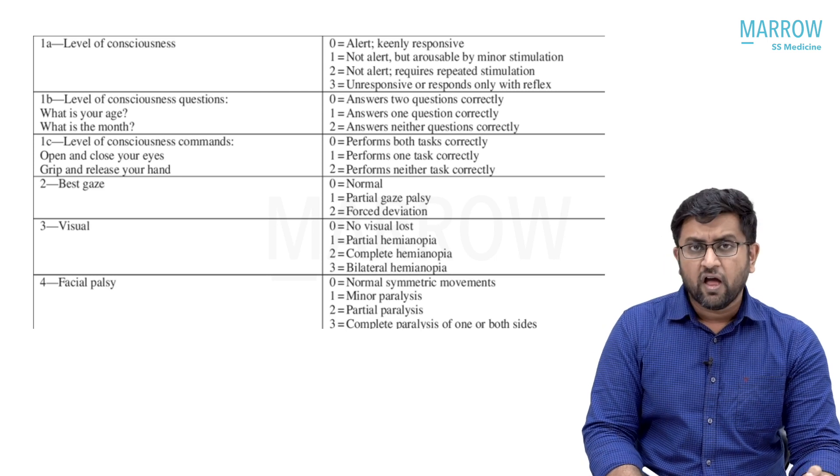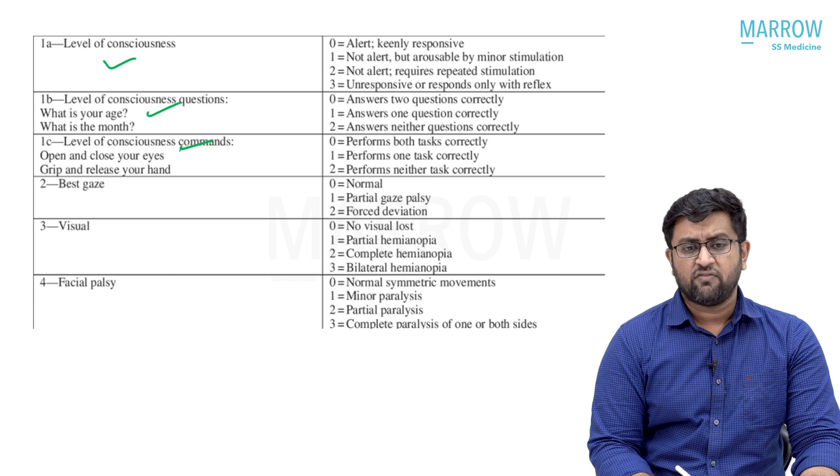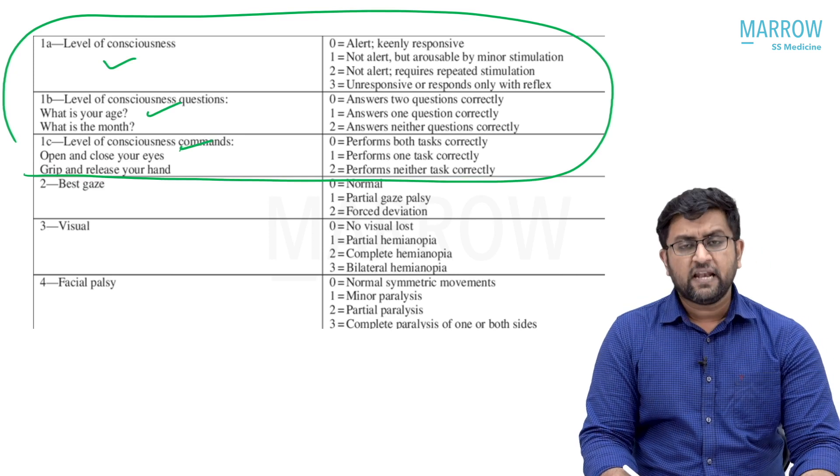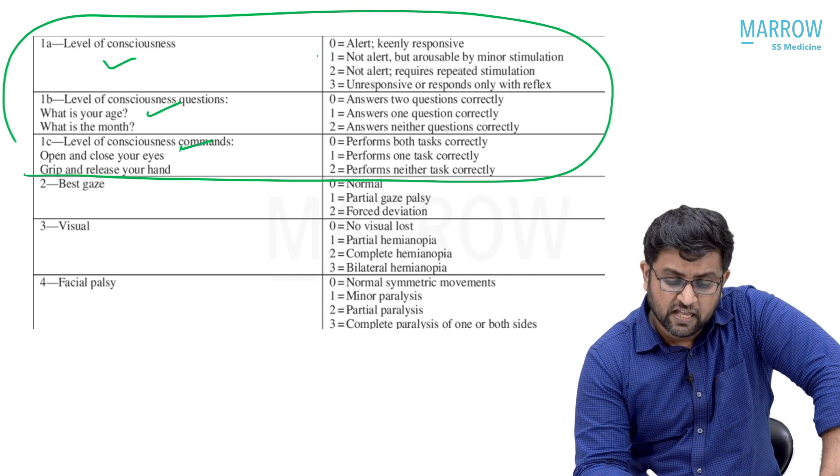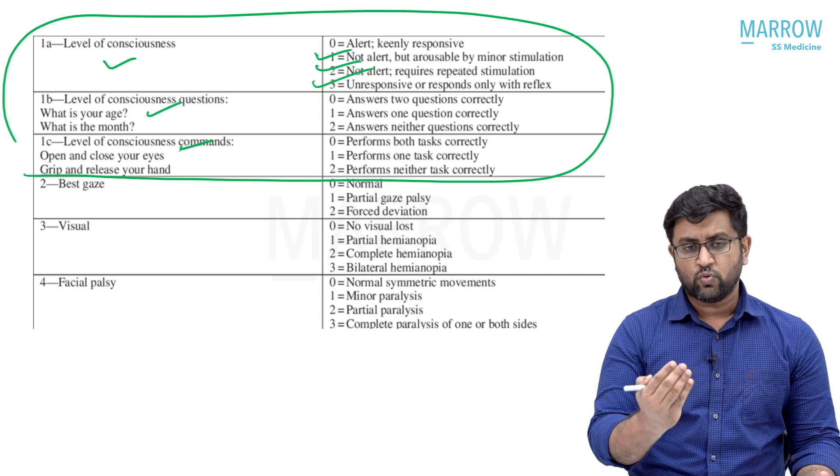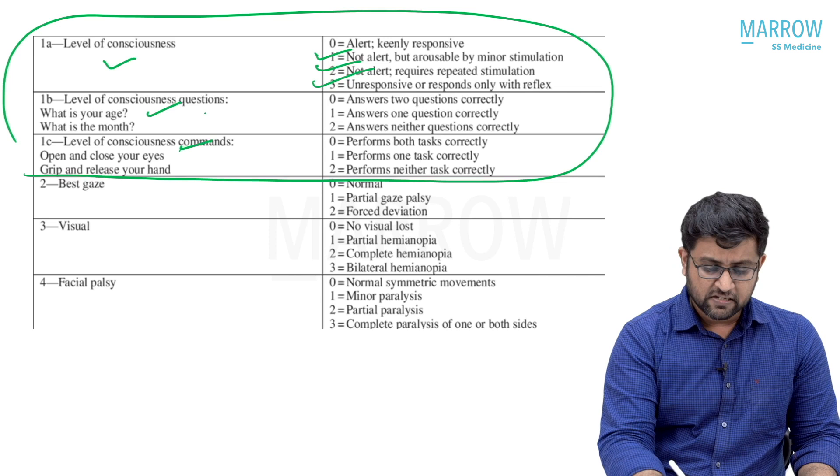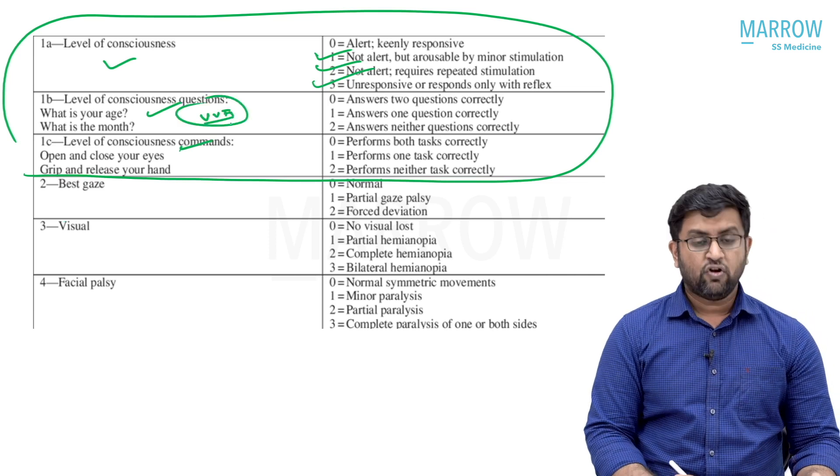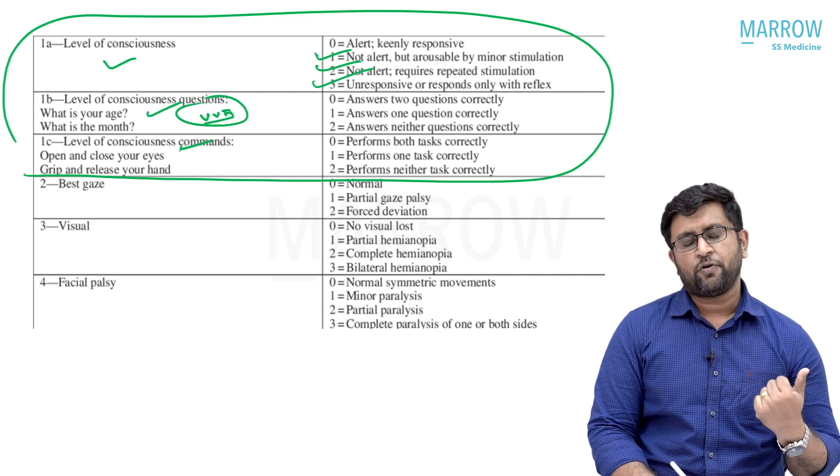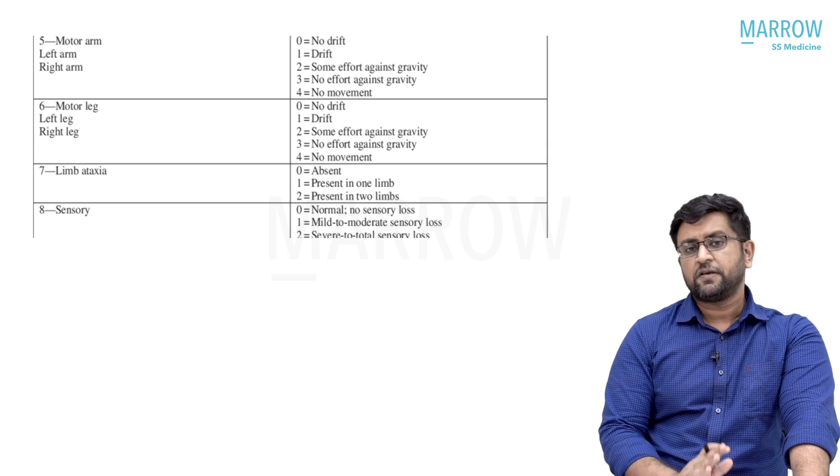This is the NIHSS score. There have been questions repeatedly from this scoring area. You should know how to assess the initial part. Especially, level of consciousness has three levels: level of consciousness questions, plain level of consciousness, and level of questions command. Questions came from these three topics. Two questions came, one in INI and one in NEET. Level of consciousness: alert is zero. Not alert but arousable by minor stimulation. Not alert but arousable by repeated stimulation. Unresponsive only with reflex. The question asks for LOC questions and LOC commands. LOC questions: you will ask two questions - what is the age and what is the month. This has been asked twice. Very important. And level of commands includes close your eyes, grip and release your hand. This is simple commands. Among the entire NIHSS, these three things you should know because questions asked from that area.